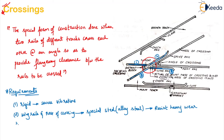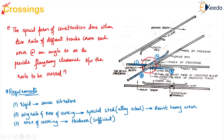The last and main requirement is the nose of your crossing. The nose of crossing should be sufficiently thick to take all the stresses occurring at the crossing. You should not make it very thin — the nose should not be very thin, it should have sufficient thickness. So these are the requirements of your crossing.